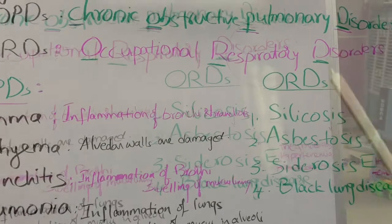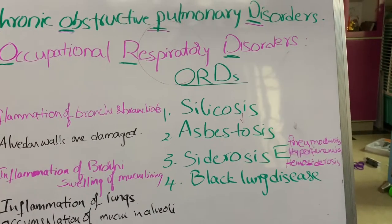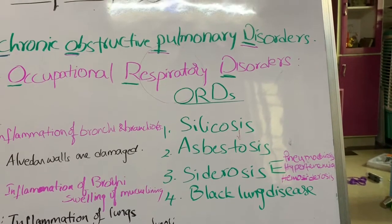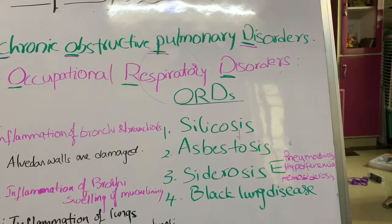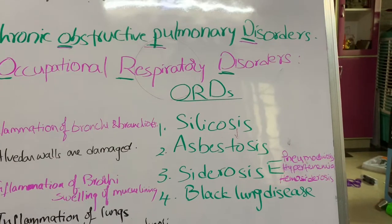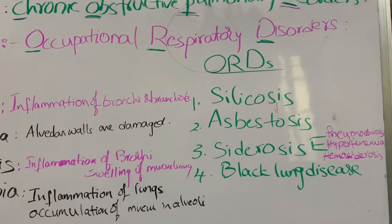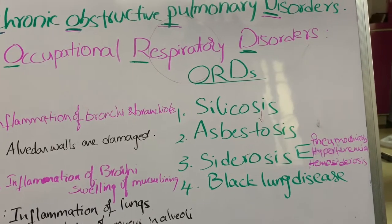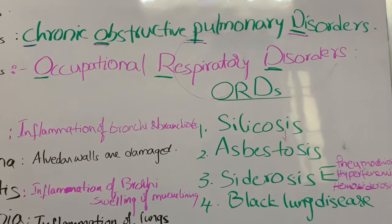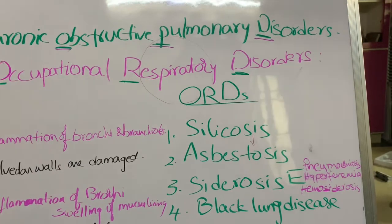The next category is ORD — occupational respiratory disorders. These disorders occur in people who work in certain industries like coal mines, quarries, and stone crushing industries. There are four types. The first is silicosis, which occurs in persons who are long-term exposed to silicon dust. This dust is mainly found in quarries and stone crushing areas.